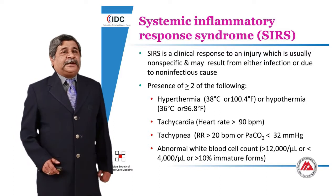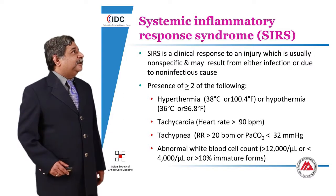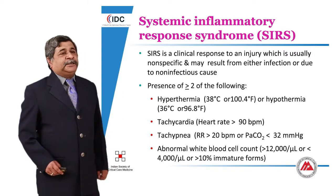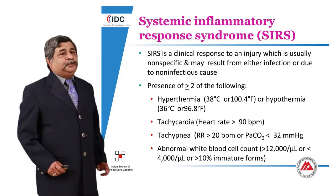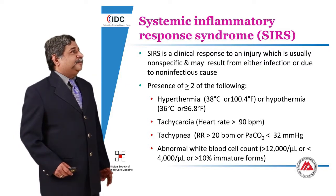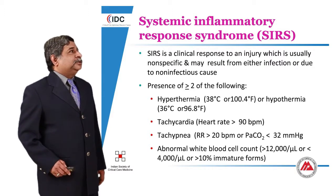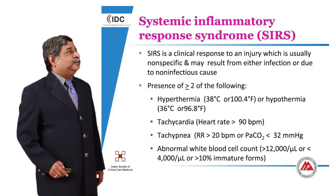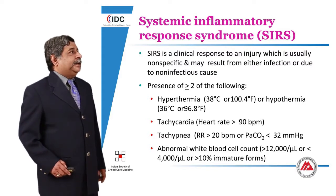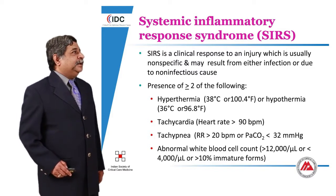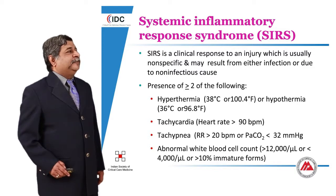The first concept when we start talking about severe sepsis and septic shock is systemic inflammatory response syndrome (SIRS). It is a clinical response to an injury which is usually non-specific and may or may not result because of infection, or it may have a non-infectious cause. SIRS is defined as presence of two or more of the following: hypothermia or hyperthermia, tachycardia, tachypnea or PaCO2 less than 32 mmHg, and abnormal white cell count which may be leukopenia or leukocytosis.